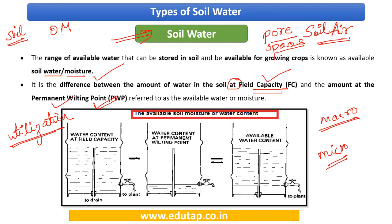Kindly have a look at the diagram below. Initially, when we pour water into the soil until all pores are completely filled, that is the saturation level. At that point, water starts to drain because of gravitational force — this is called field capacity, when water drains freely due to gravity. After a period of time, all available water gets utilized by the plant, reaching a level where water is present but the plant cannot effectively use it, as it is very minimal and roots cannot grasp it.